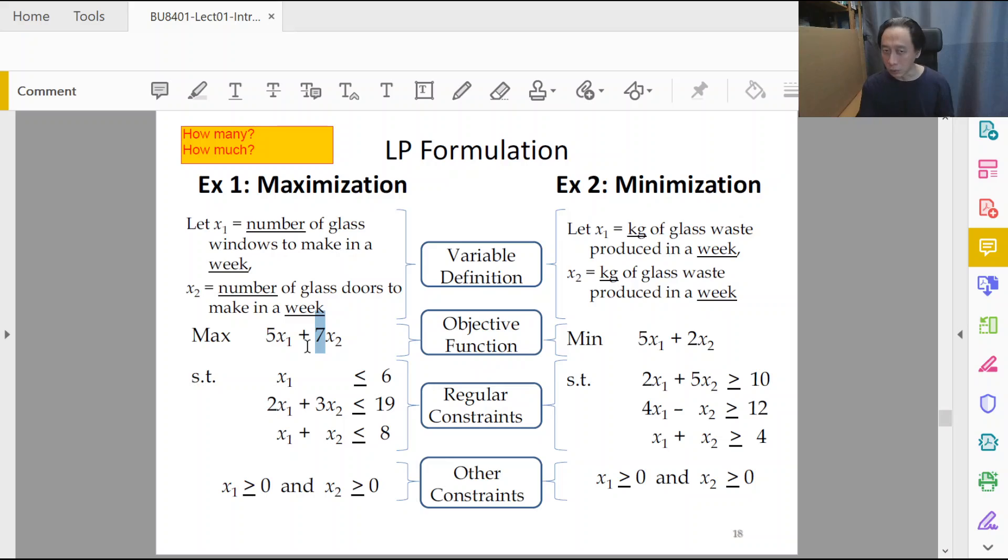Do we want to maximize glass window profit or glass door profit? No, we want to maximize the sum total. It could be that the optimal solution is zero glass windows and ten glass doors, or make three glass windows and five glass doors, various combinations we don't know.